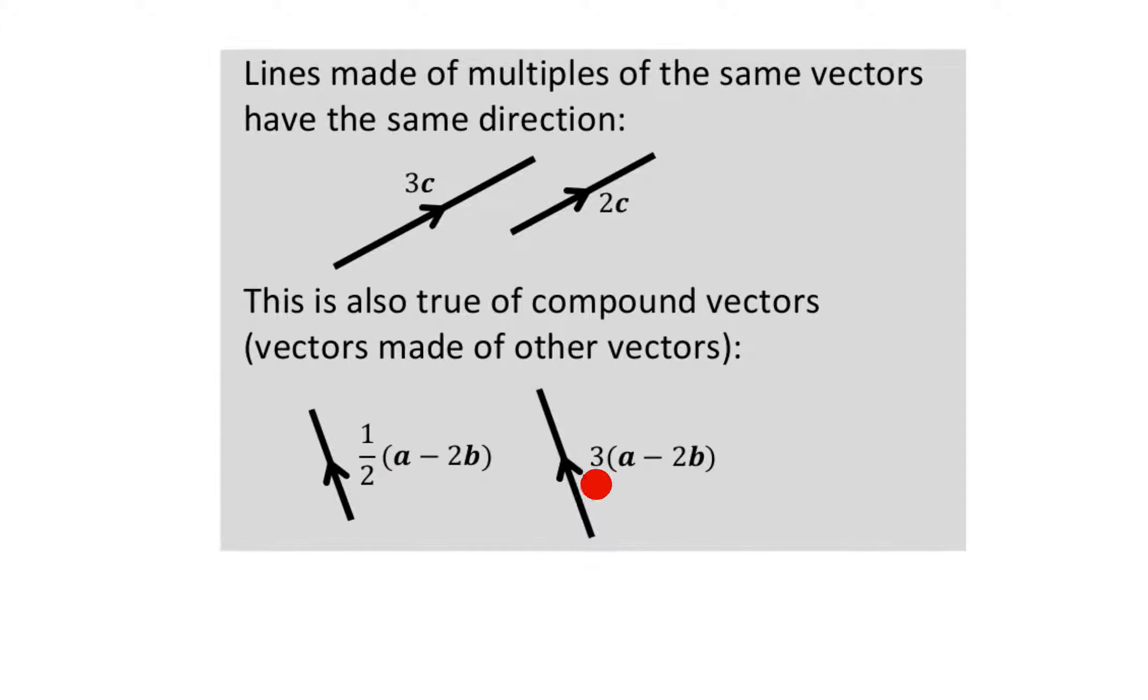Either way, they're both going to go and point in the same direction. This line's obviously shorter because it's half of a-2b, and this is three times a-2b, so this one's longer. But they both point in the same direction, and that's all I want to explain in this video.